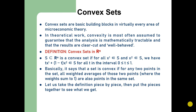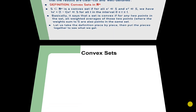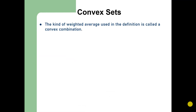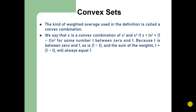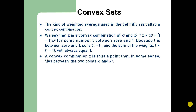Let us take the definition and analyze it. The kind of weighted average used in the definition is called a convex combination. We say that z is a convex combination of x1 and x2 if z equals tx1 plus 1 minus t times x2, for some number t between 0 and 1. Because t is between 0 and 1, then 1 minus t is also between 0 and 1, and the sum of the weights t plus 1 minus t will always equal 1. A convex combination z is thus a point that lies between the two points x1 and x2.